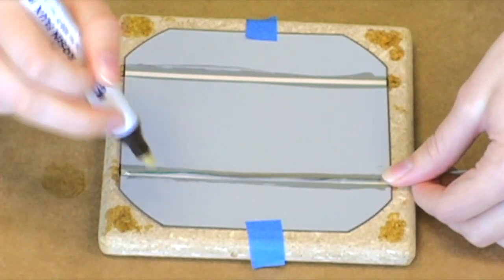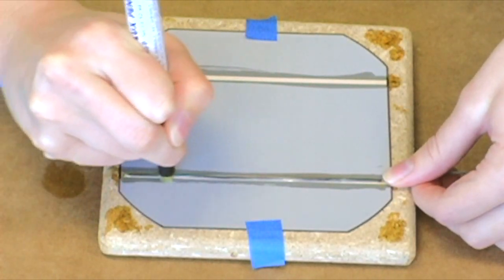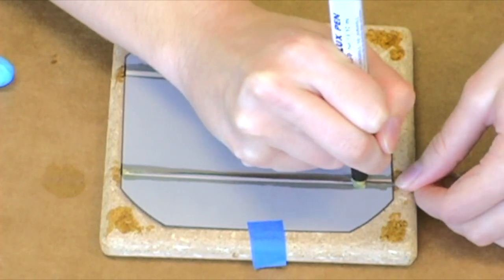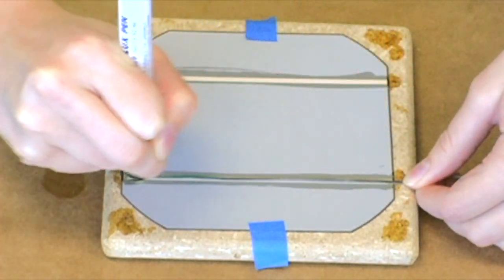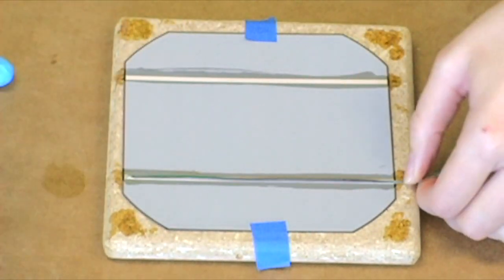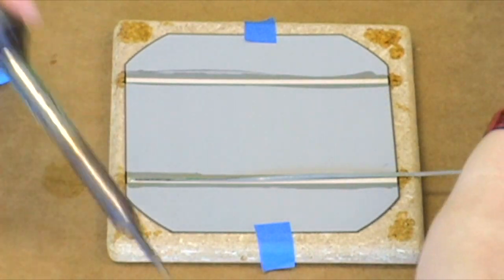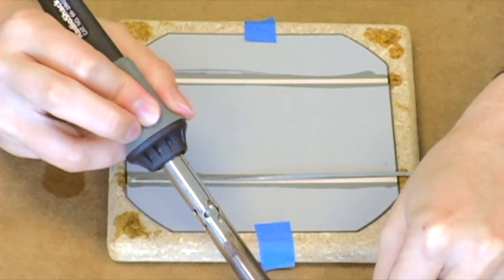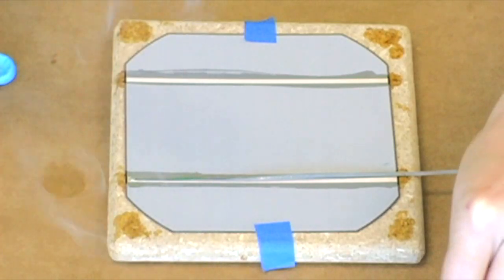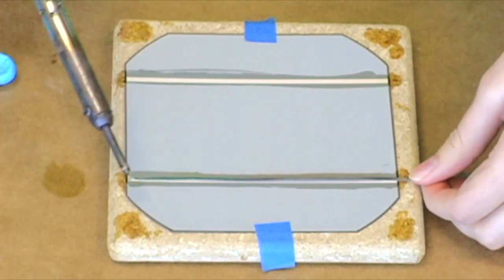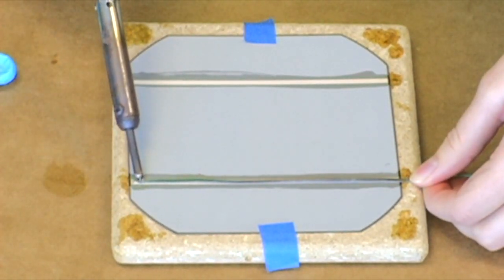Again, since flux is your friend, we're going to apply another couple of coats of flux to the top of the tabbing wire before soldering it in place. Now just place about three-eighths of an inch of solder on your soldering iron and gently and carefully spread the solder right on top of the tabbing wire.